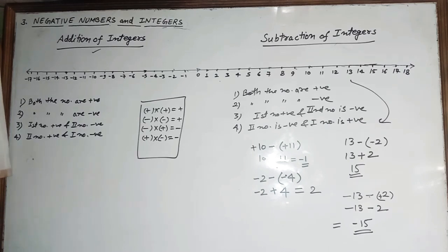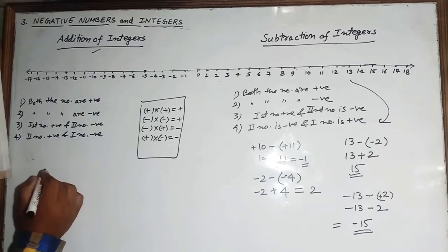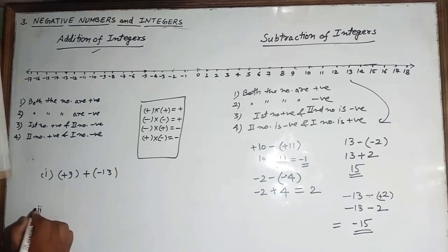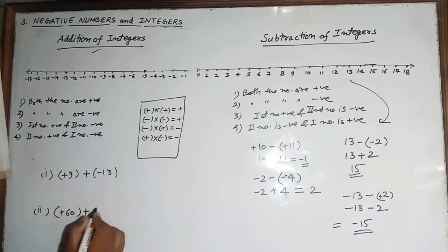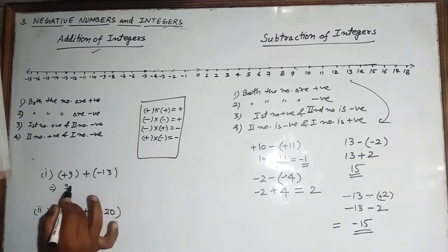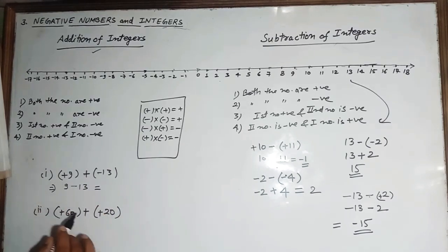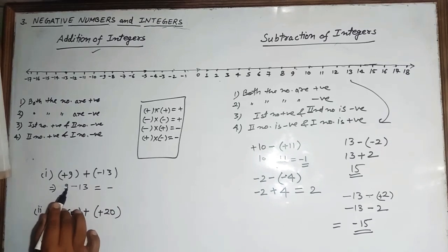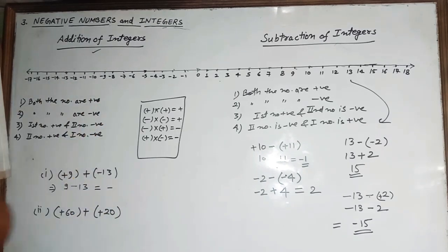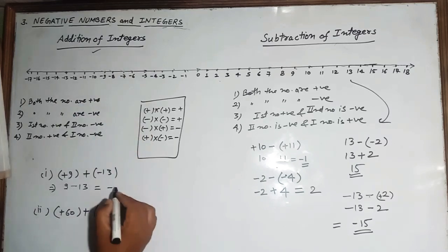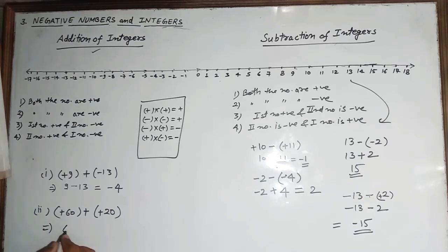More examples: For plus 9 plus minus 13, plus into minus gives minus 13. The absolute value of 13 is greater, so the sign is negative. On the number line from minus 13, move 9 steps right — giving minus 4. For plus 60 plus plus 20, both are positive, so 60 plus 20 equals 80.